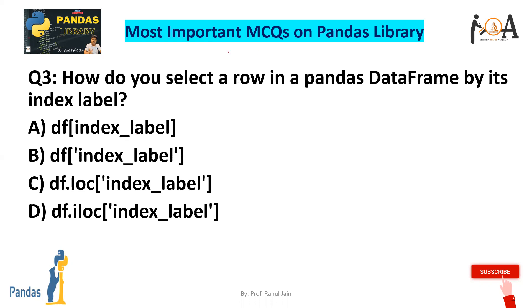Question 3: How do you select a row in a pandas DataFrame by its index label? For selecting by index label, we need to use loc — that is, location. So df.loc followed by the index label in square brackets under single quotes. So option C is the correct answer.